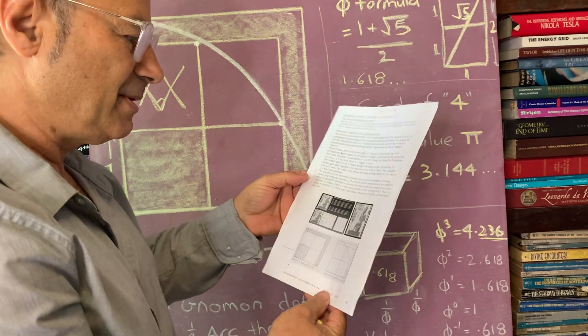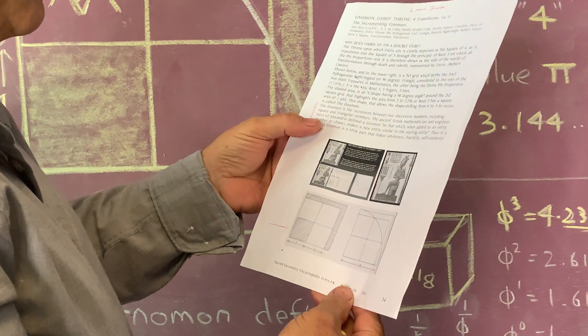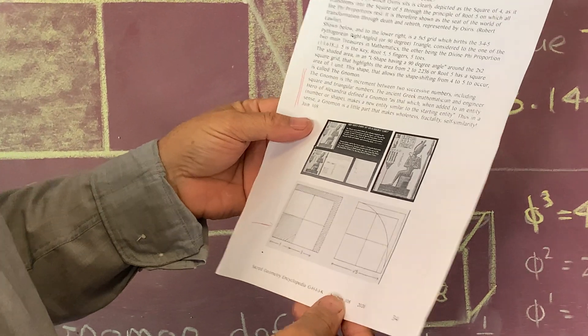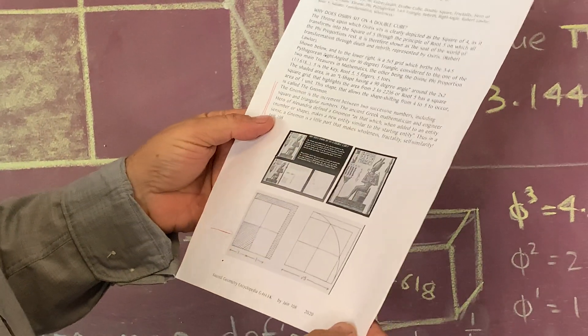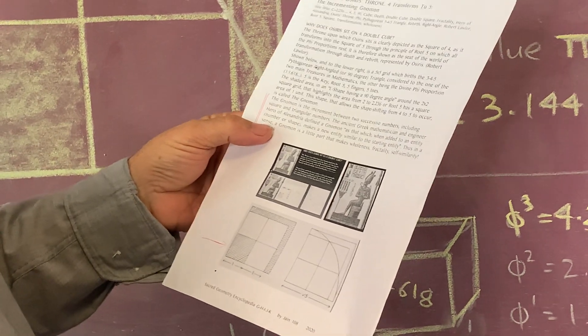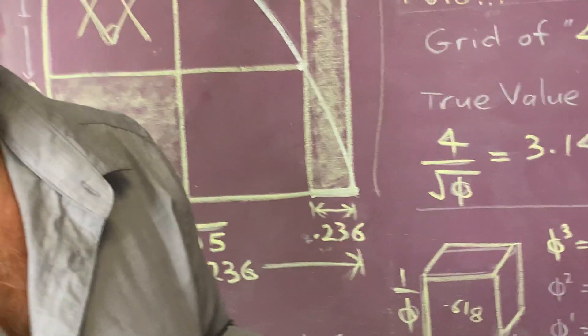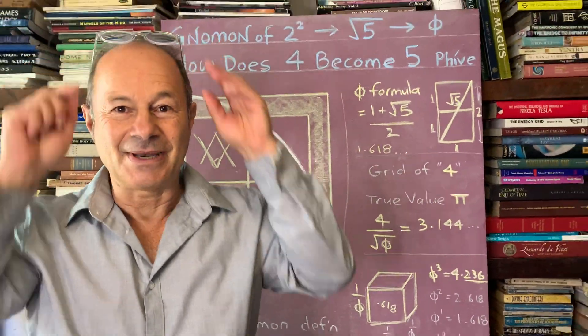when added to an entity or number or shape, makes a new entity similar to the starting entity. It's in a sense that gnomon is a little part that makes wholeness. It makes fractality. It makes self-similarity.